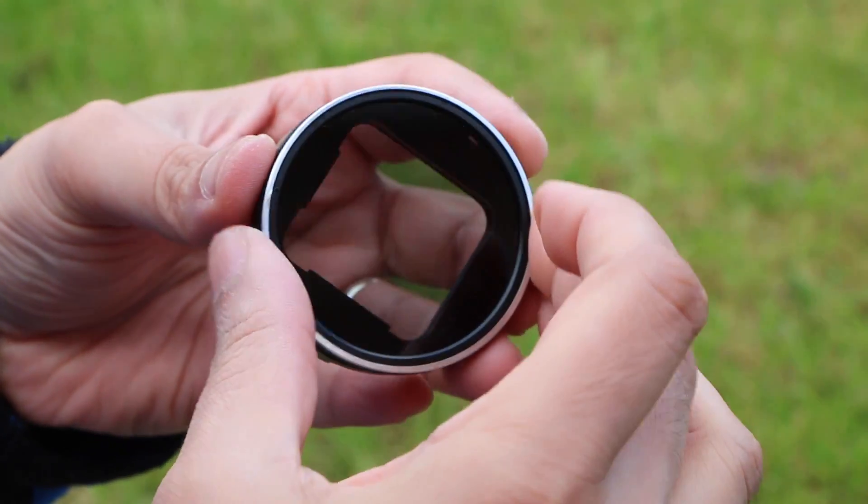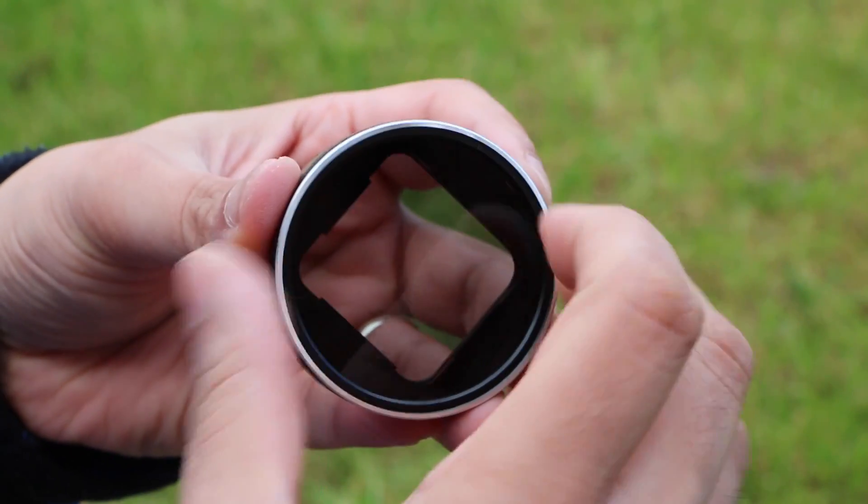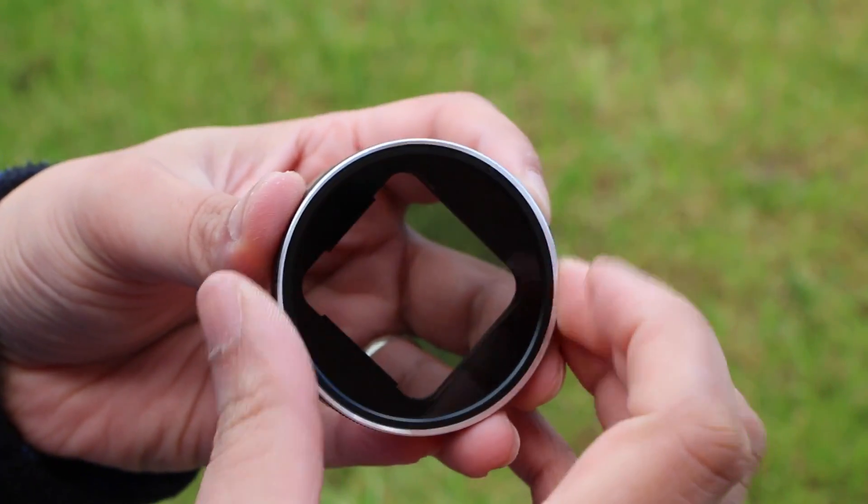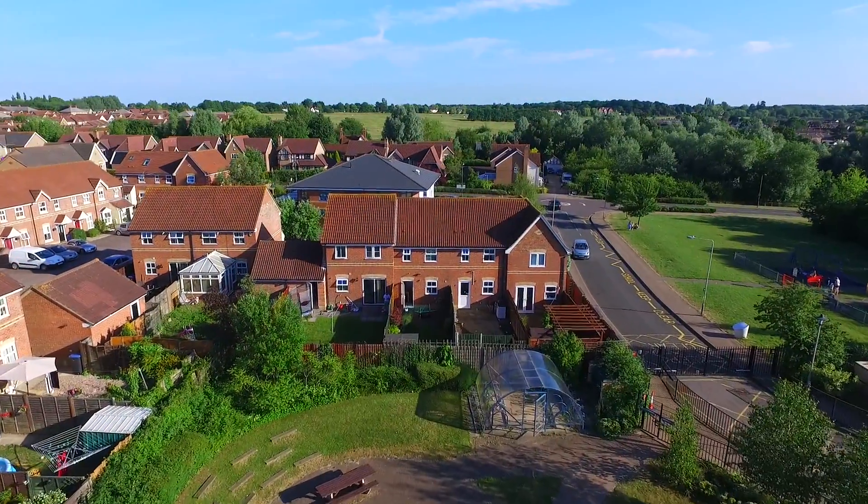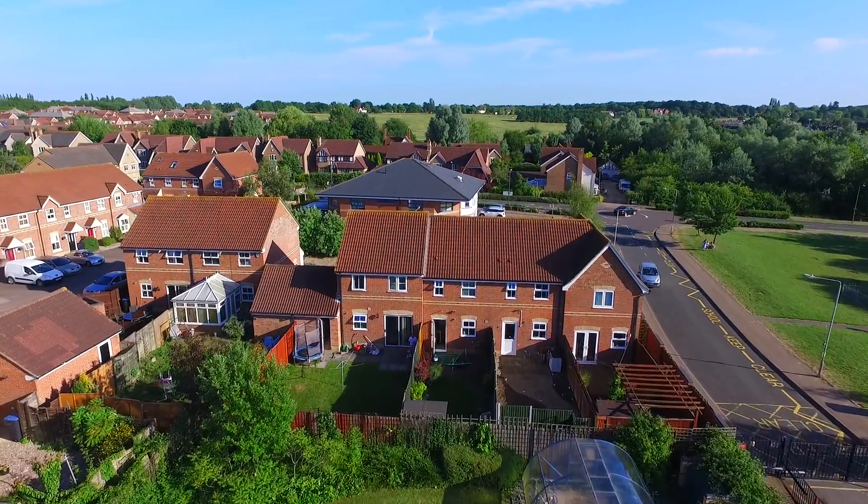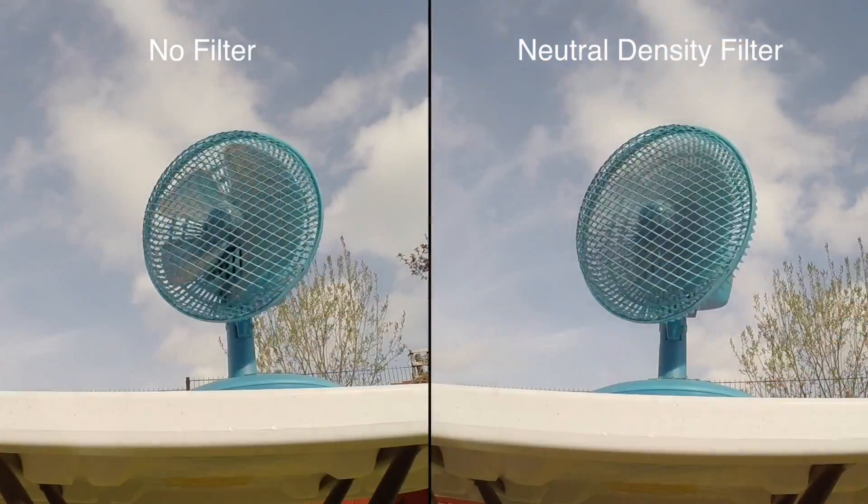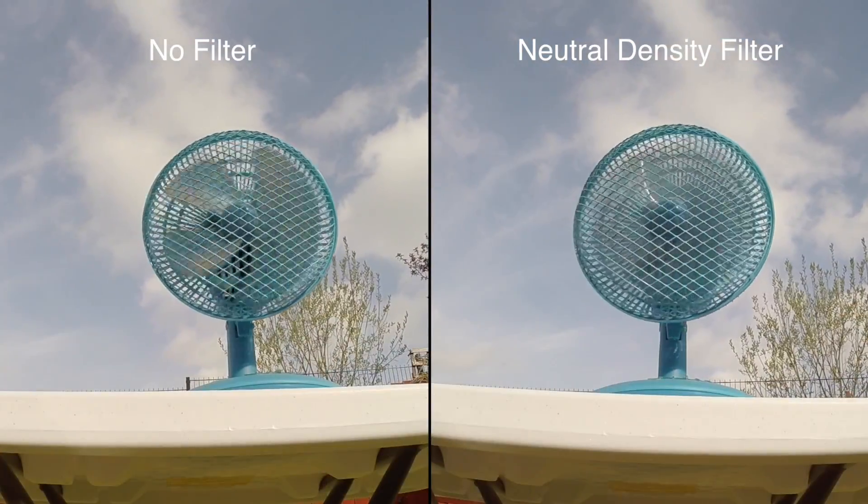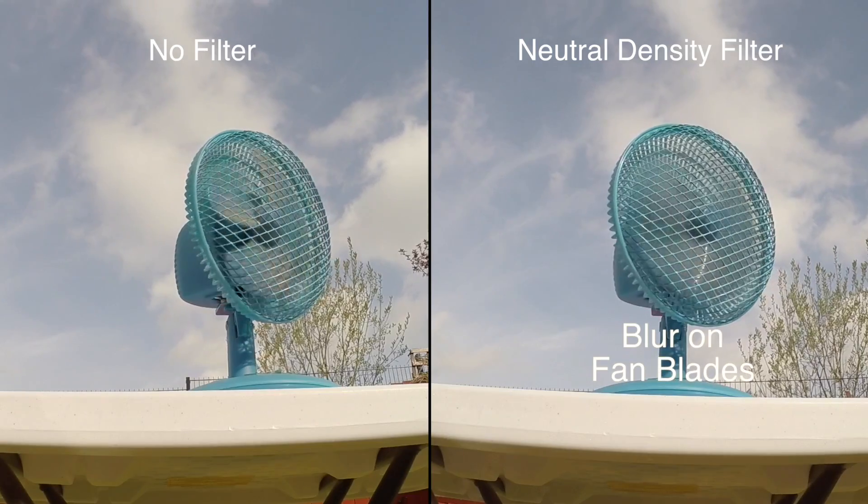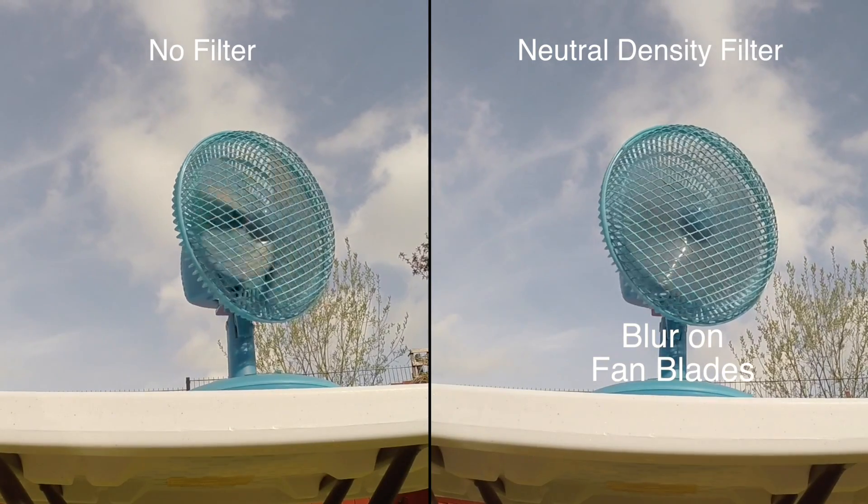In basic terms, a neutral density filter comes in various strengths and works by cutting the light entering the camera lens. These filters won't drastically change the image, but they force the camera to slow its shutter speed, applying a slight blur to moving objects.